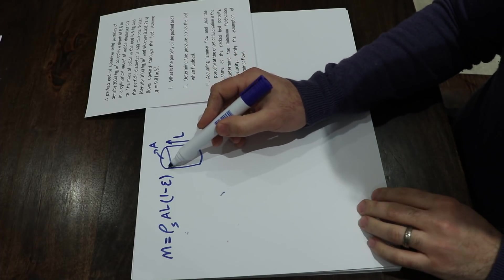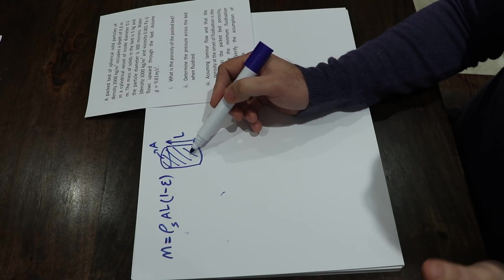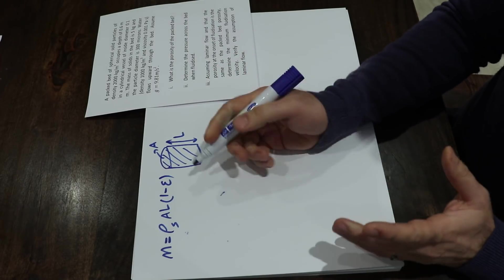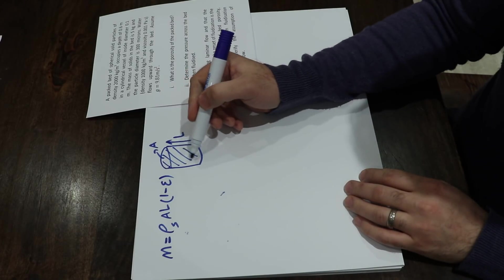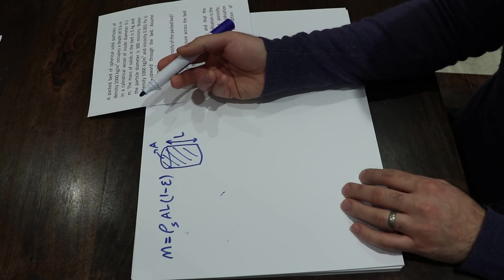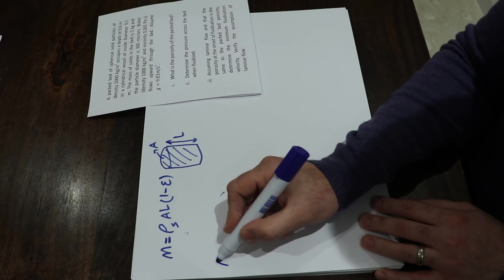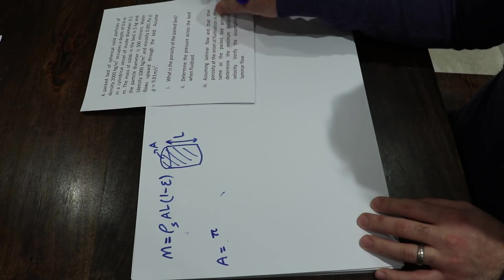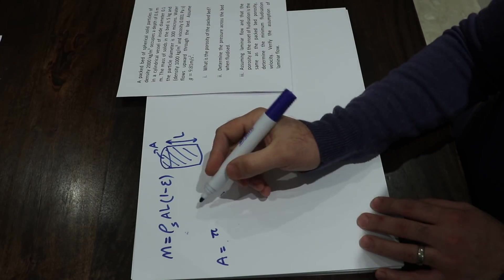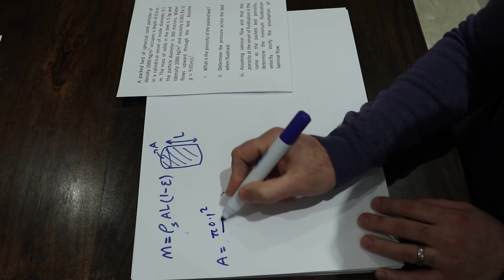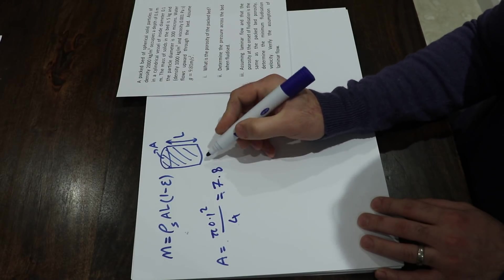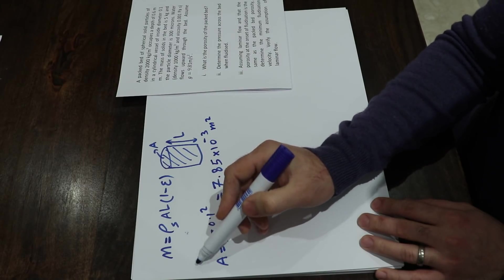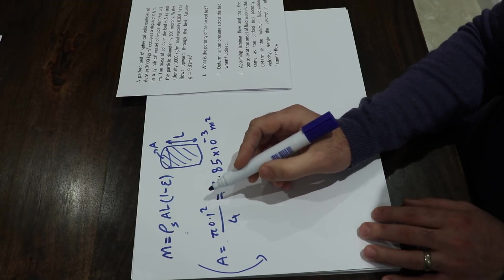You need to multiply by (1 − ε), where ε is the porosity, because this volume is occupied by both the gas phase and the solid phase. You multiply by (1 − ε) to reduce the part of the volume occupied by the gas. The cross-sectional area A = π × (0.1)² / 4, which equals 7.85 × 10⁻³ m².